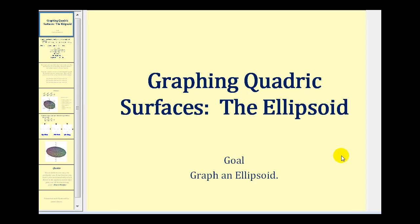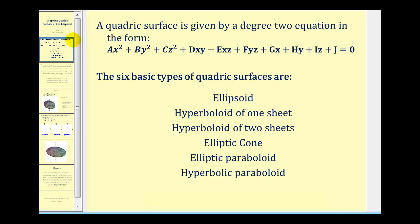Welcome to a video on graphing the quadric surface, the ellipsoid. As discussed in the introductory video, a quadric surface is given by a degree two equation in the following form. However, we're not going to be considering the rotation of these quadric surfaces, so our equations will not contain an xy term, xz term, or yz term.